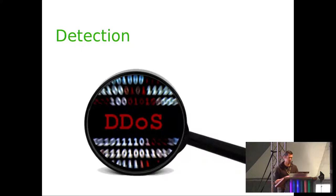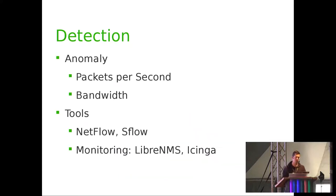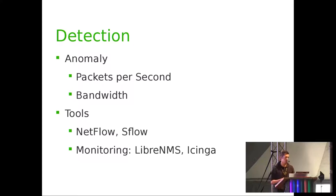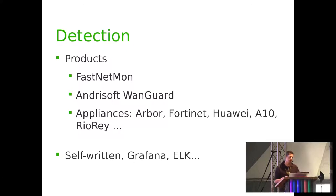How to detect DDoS in order to block it? You can work with anomalies — for example, packets per second for a specific service. Look at bandwidth using tools based on NetFlow or sFlow (sFlow is packet sampling; NetFlow sends complete flows to an analyzer). Tools like LibreNMS or Cacti can show bandwidth limits. Fastnetmon is open source and highly recommended. Or use something self-written like Grafana or an ELK stack with custom rules.